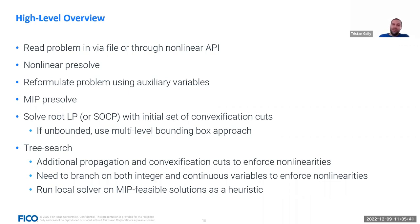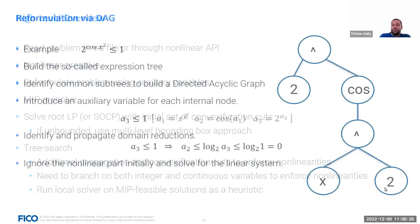On this linear problem in the auxiliary variables, we perform a MIP presolve, then start our root LP — or in some cases include convex quadratic information for a second-order cone or general convex quadratic problem — with an initial set of convexification cuts to improve our linear relaxation. If the problem is unbounded, we use specific approaches to enforce boundedness. After that, we perform a tree search just like the MIP case, with additional propagation methods and convexification cuts to enforce nonlinearities. Unlike the MIP case, we may also need to branch on continuous variables, and we use our local NLP solvers as heuristics whenever we find MIP-feasible solutions to extend them to MINLP solutions.